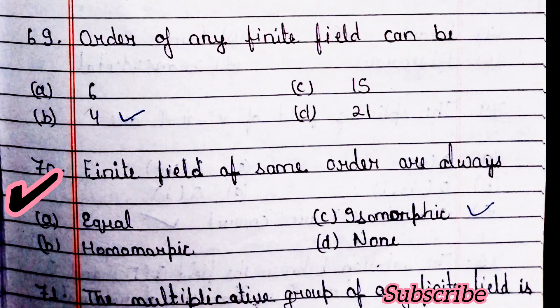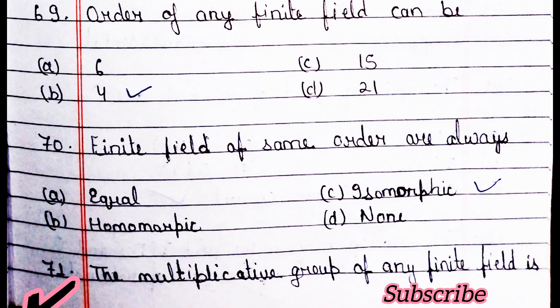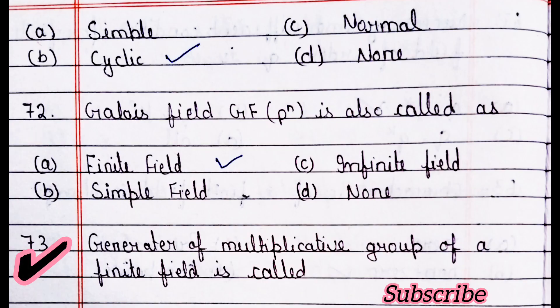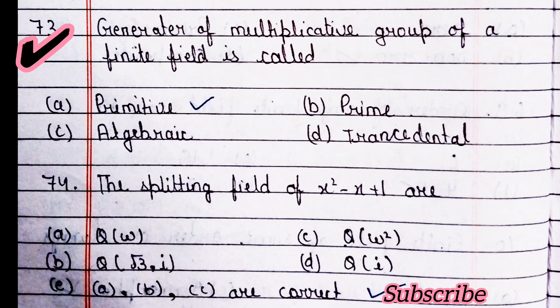Next question: order of any field can be 4 — option B is right. Finite fields of the same order are always isomorphic — option C is right. The multiplicative group of any finite field is — option B is right, cyclic. Galois field GF(p^n) is also called a finite field. The generator of the multiplicative group of a finite field is called primitive.